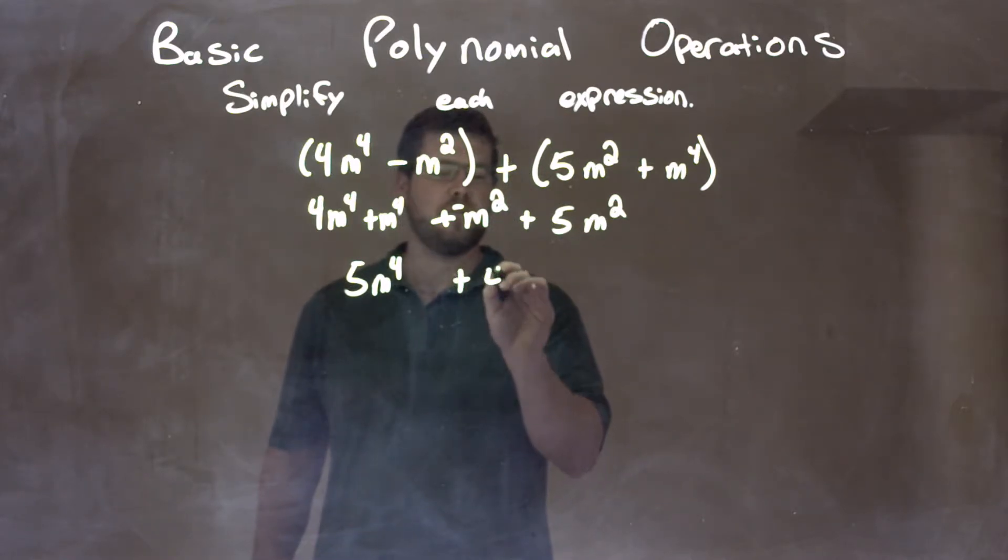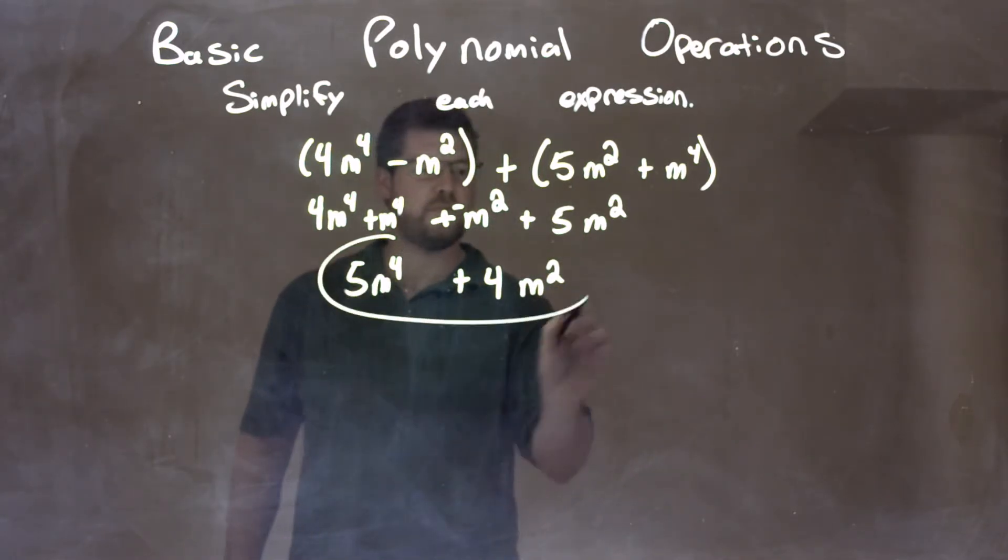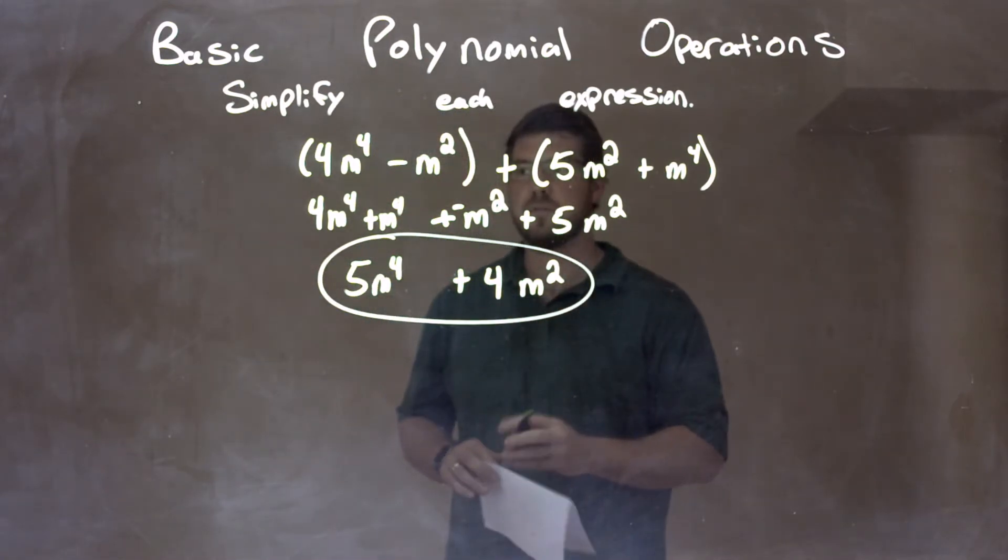So we have plus 4m squared right there. And there we have our final answer, 5m to the 4th power plus 4m squared.